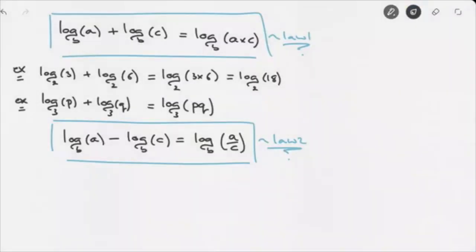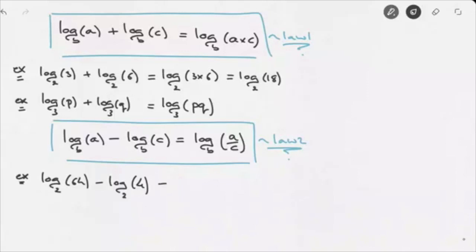Let's see how we can use this law. For instance, let's say we're given log base 2 of 64 minus log base 2 of 4. Using this law of logarithms, we can say this equals log base 2 of 64 divided by 4, which equals log base 2 of 16, which equals 4.